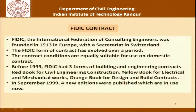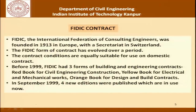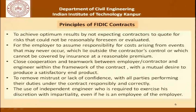Coming to our discussion on FIDIC contracts: FIDIC is the International Federation of Consulting Engineers — this is the English translation of the professional body which was founded in 1913 in Europe with the secretariat in Switzerland. The contract conditions as defined in FIDIC are equally suitable for use in domestic contracts; it is not necessarily focused on international contracts. Before 1999, FIDIC had three forms: the red book for civil engineering construction, the yellow book for electrical and mechanical works, and the orange book for design and build contracts. In 1999, four new editions were published which are in use today. We will go through the principles of FIDIC contracts in this slide.